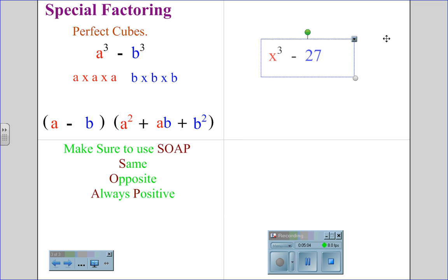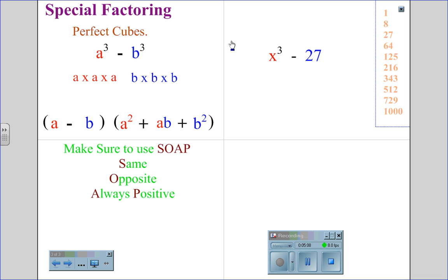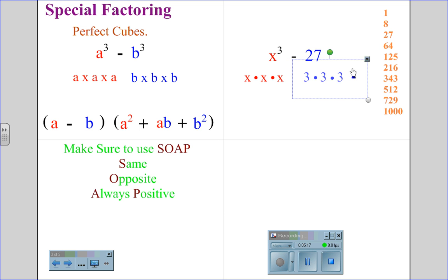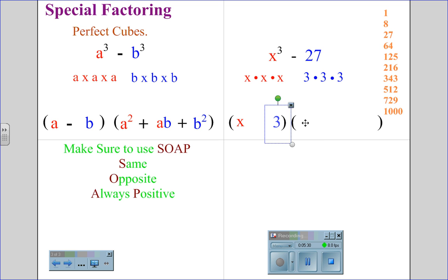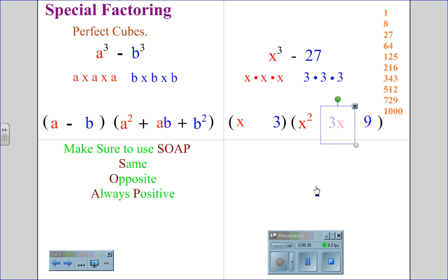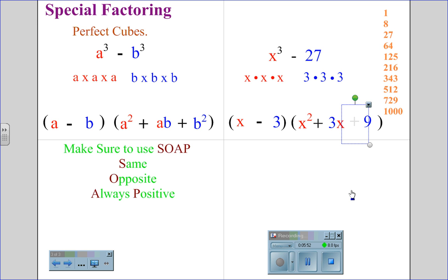For the situation x cubed minus 27, we recall from the list of perfect cubes that 27 is 3 times 3 times 3, and x cubed is x times x times x. To factor this perfect cube, we begin with our parentheses set, place in our first factor x, and our second factor 3. Square the first factor to get x squared, square the second factor to get 9, and multiply to get the middle term: 3 times x. The acronym SOAP tells us the first sign must be the same — negative. The second sign is the opposite — positive. And the last sign is always positive: same, opposite, always positive. For the perfect cube x cubed minus 27, the factors are x minus 3 times the quantity x squared plus 3x plus 9.